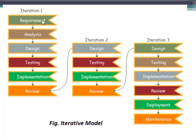We will start some phases with some requirements. At the end, we will have a software. This software is going to be reviewed for its perfection. If it is perfect, then this is the final product. If it is not perfect, if there are changes required or new requirements, then we will start with the second iteration of this project.